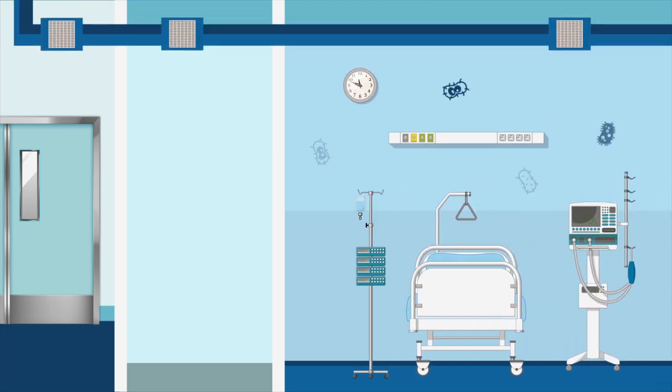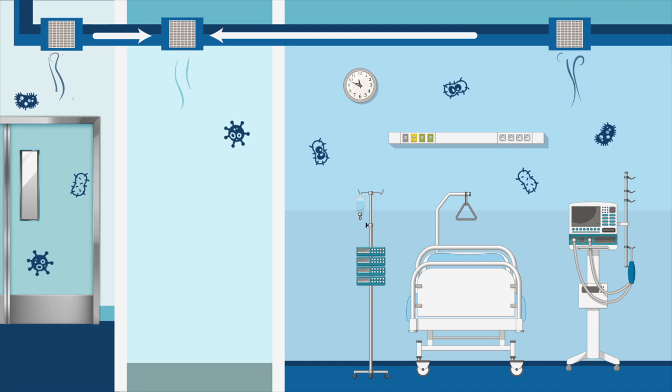PE rooms have an anti-room that separates the patient room from the corridor. This space serves a particular and important role in preventing infections. The purpose of an anti-room for a PE room is to control the airflow so the air from the rest of the hospital doesn't flow into the PE room, keeping the air in the PE room as free of germs as possible.